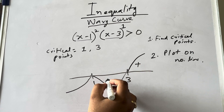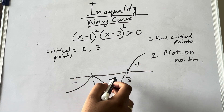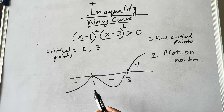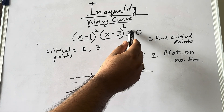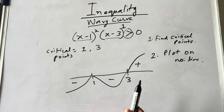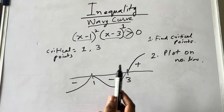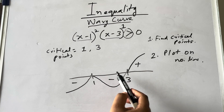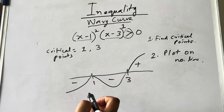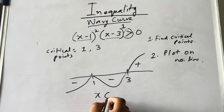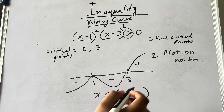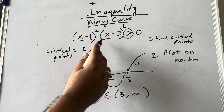Mark this: the upper side is plus, the lower side is minus. Now you have to see the sign of the inequality. It is greater than. If a greater than sign is given, you take the positive part. The positive part here is x ∈ (3, ∞). This will be the answer for this inequality.